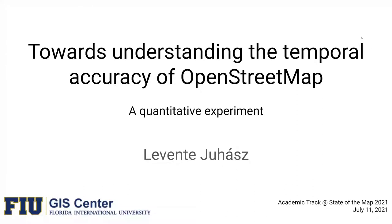Hello, everyone. Welcome to my talk at the academic track at State of the Map 2021. It's titled Towards Understanding the Temporal Accuracy of OpenStreetMap. My name is Levente Juhász. I'm faculty at Florida International University, and I like to think that I'm pretty active in the OpenStreetMap community — as a researcher, as a mapper, and I've also been involved in community building mainly in South Florida, where we organize several meetups to kickstart a mapping community.